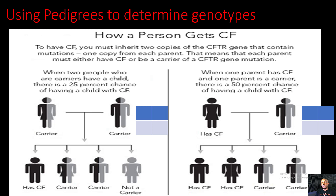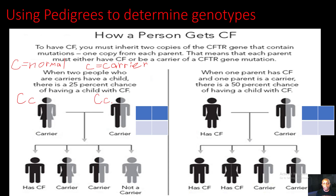Each parent must either have cystic fibrosis or be a carrier of a cystic fibrosis gene mutation. To determine the genotype, we'll identify that big C — this is going to represent an individual that's normal, so two big C's is normal. A small C is going to represent that an individual is either a carrier, or two small C's together means an individual actually has cystic fibrosis. So when two people who are carriers have a child, there's a 25% chance of having a child with cystic fibrosis. If this woman is a carrier, she's going to have a big C and a small C. If this man is a carrier, he's going to have a big C and a small C.